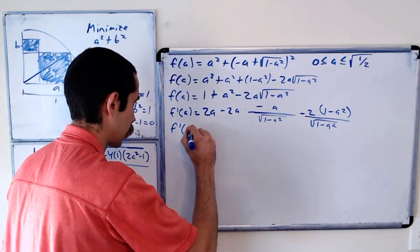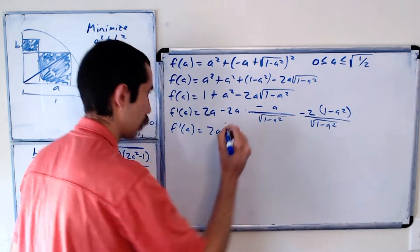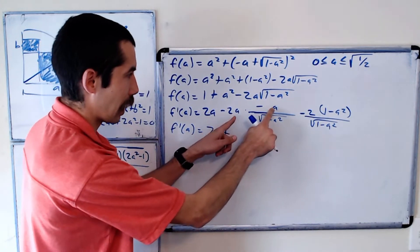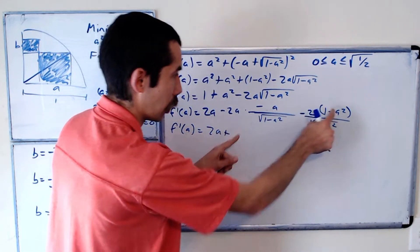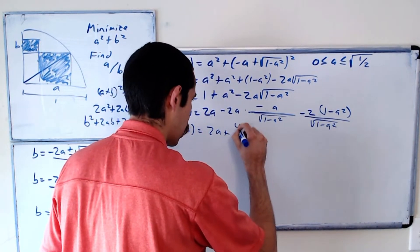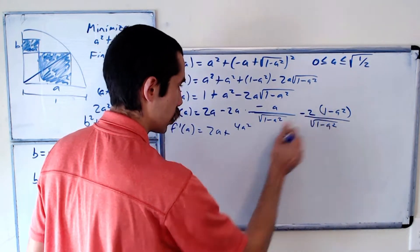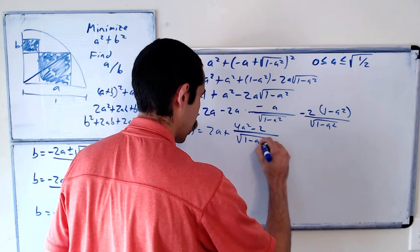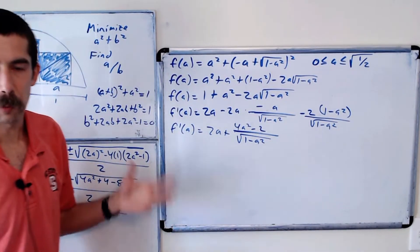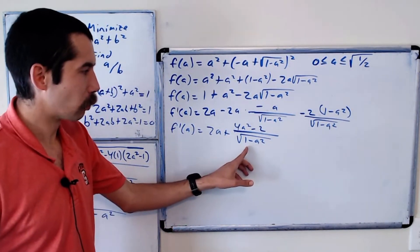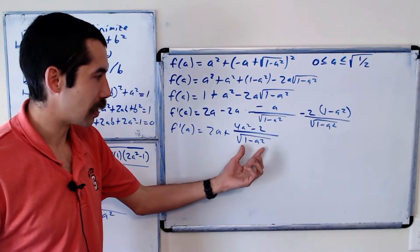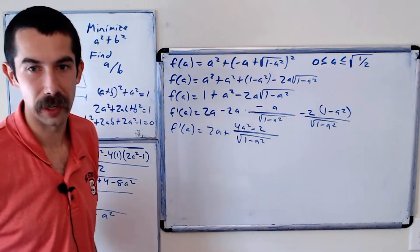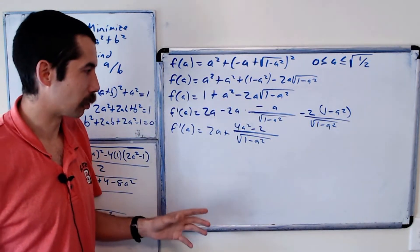Combining terms, f′(a) = 2a + (4a² − 2) / √(1 − a²). We want to find when this equals 0 or is undefined. Since f′ is undefined only at a = ±1, which are outside our domain, we focus on when f′(a) = 0.